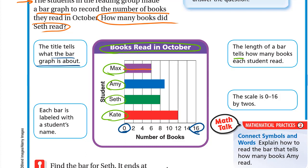For Max, the length of the bar reaches 6, so Max reads 6 books. For Seth, the bar reaches 8, so Seth read 8 books. The scale goes from 0 to 16 — that's the range we draw the bars in.